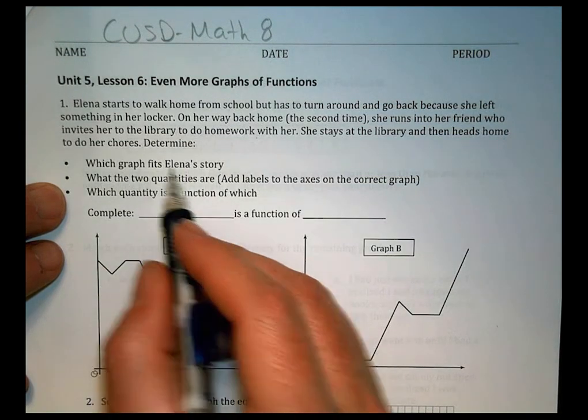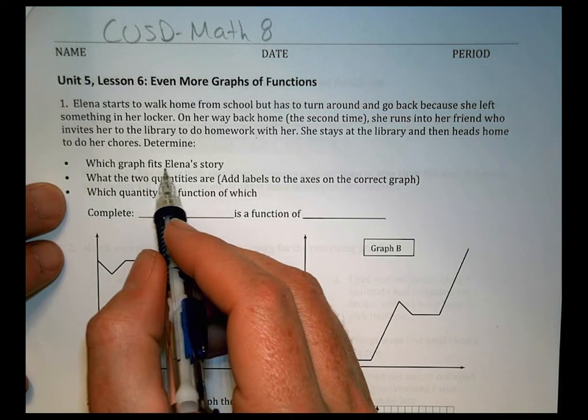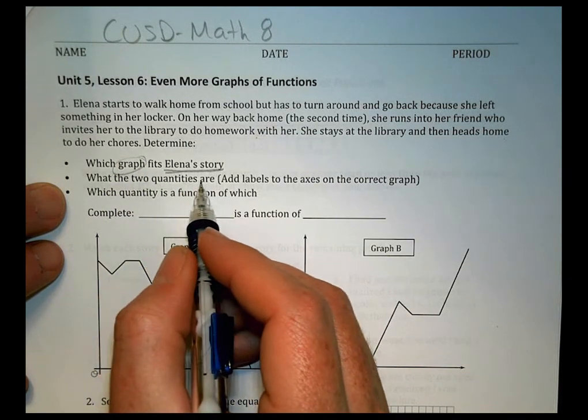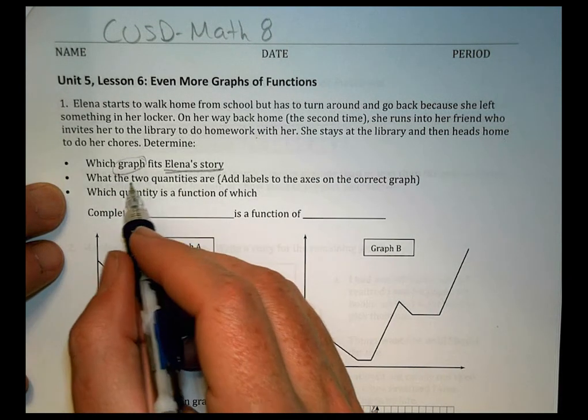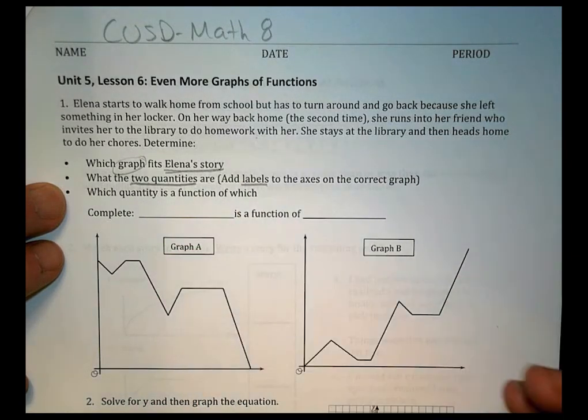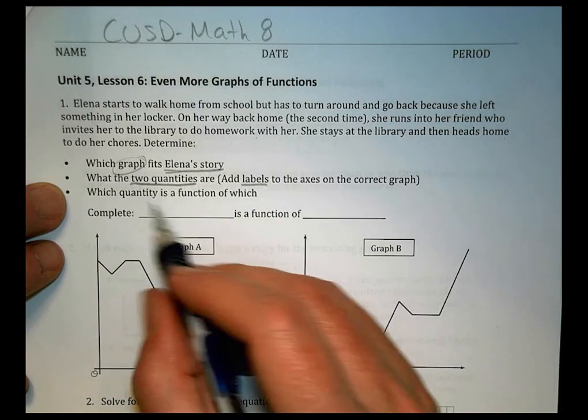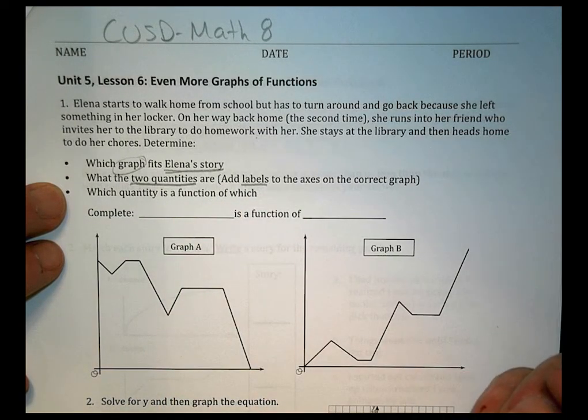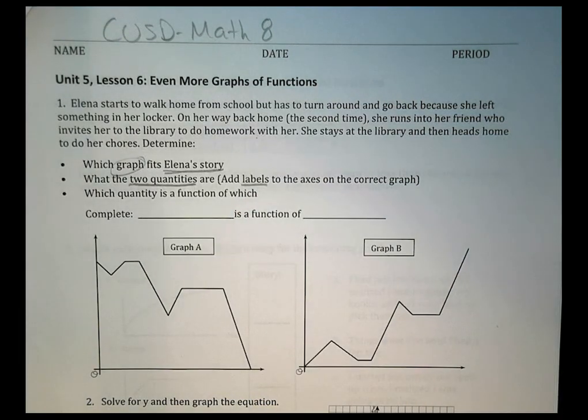Determine which graph fits with Elena's story, looking at the story and trying to make a graph that goes with that, and what two quantities are, so we're going to put some labels here to the story, and then which quantity is a function of which. So what thing is determined by or depends on the other thing. So it's looking at what depends on what.